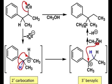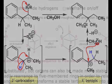I want you to be sure that every time you're working a mechanism, if you see a carbocation as an intermediate, always ask yourself: can this carbocation rearrange?